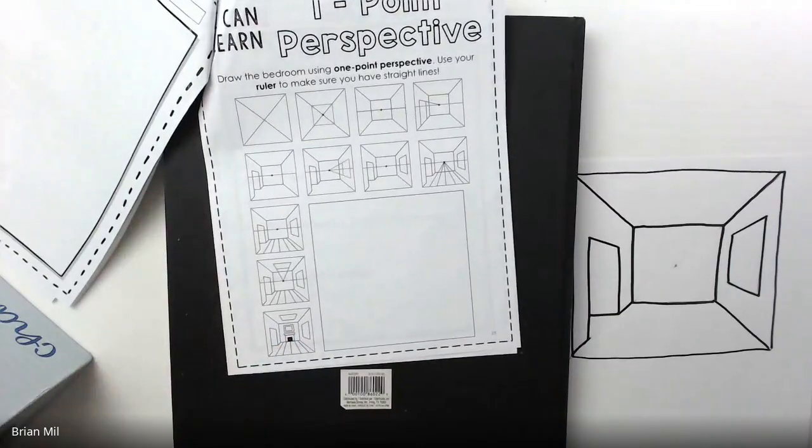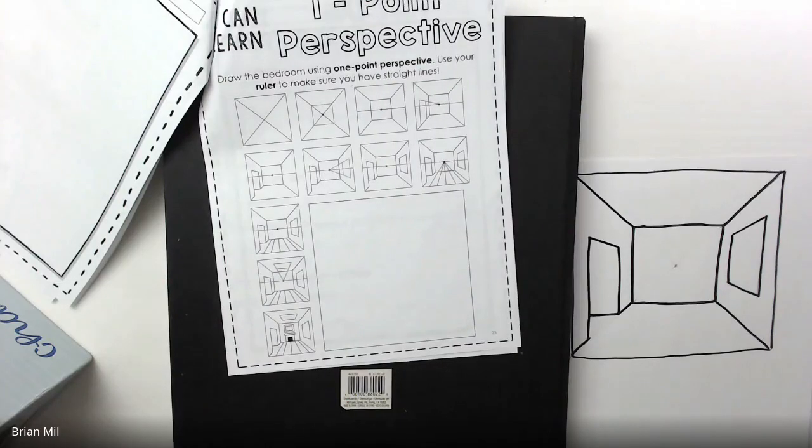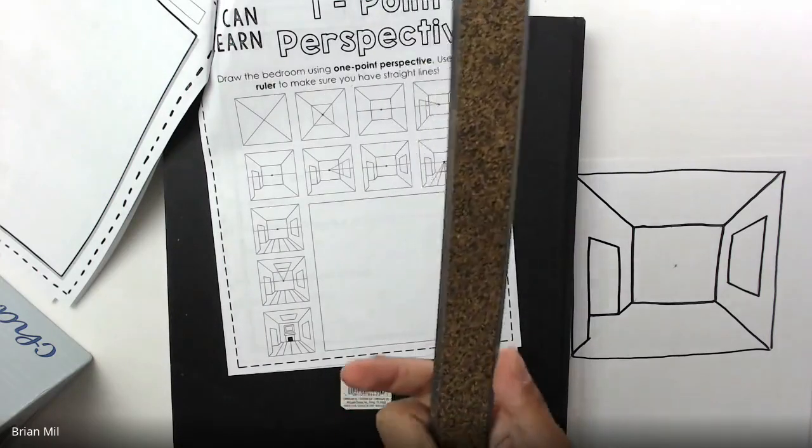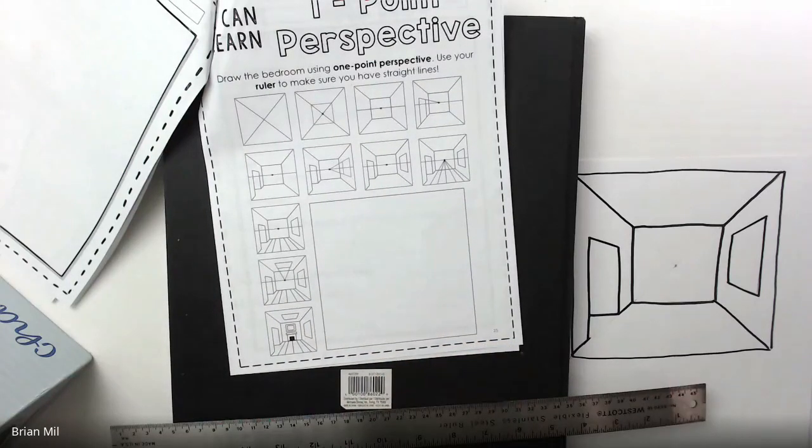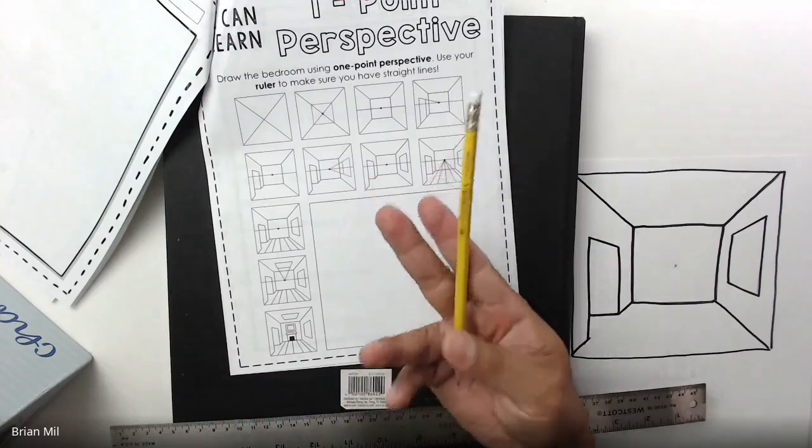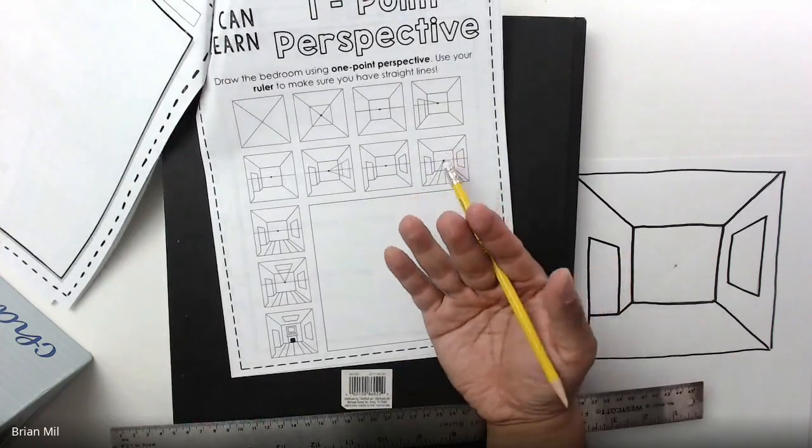And if you don't have a ruler, a side of a piece of paper will work just as fine. A book will work. But a ruler works best when it comes to this project. And, of course, a pencil because you will be erasing a lot. So make sure you have these materials out. We're going to start rolling it right away.